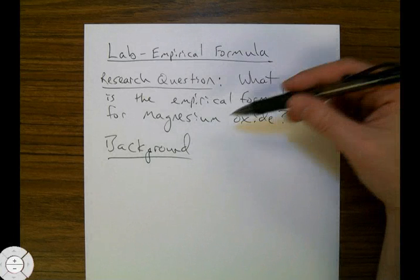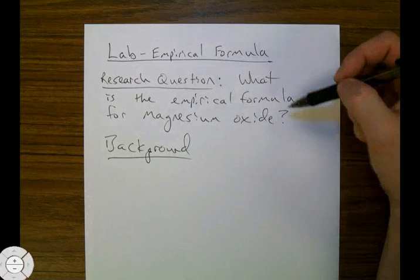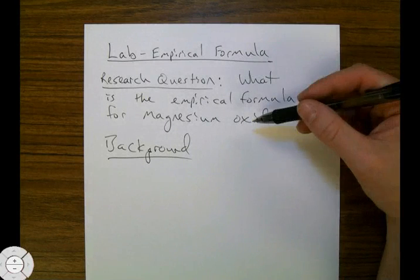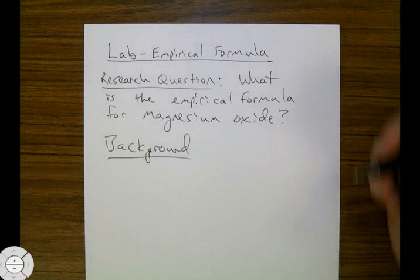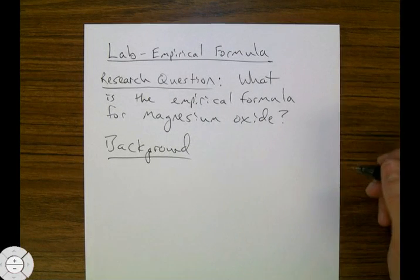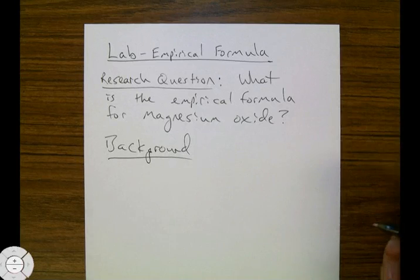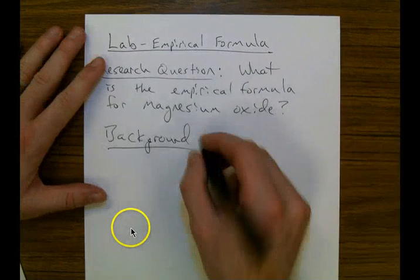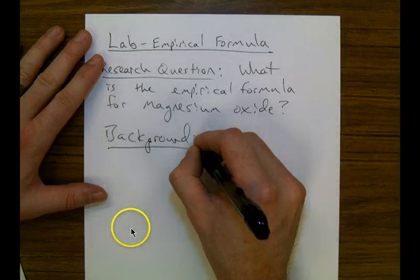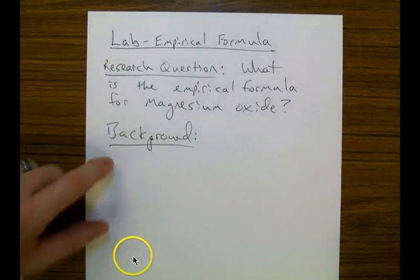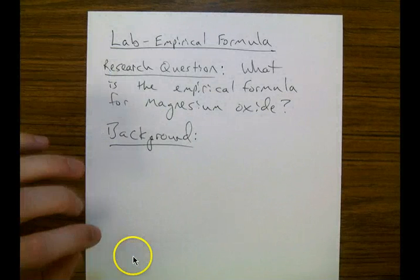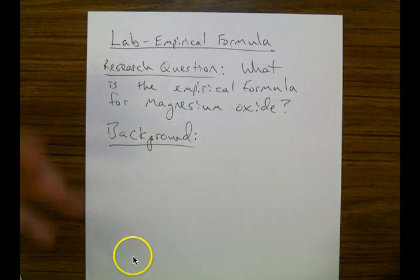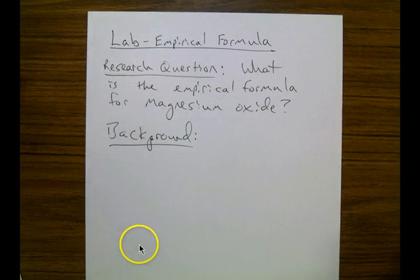So we're going to be forming something called magnesium oxide, and we're going to try and figure out what the empirical formula is. Go ahead and hit pause and please write this down in your lab notebook. Next, what I'd like you to do is write background — we're going to write down some background information about what an empirical formula actually is.